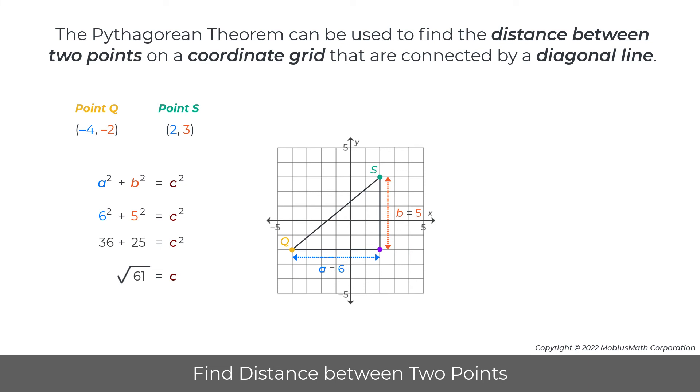For these two points, the diagonal distance is the square root of 61, which is almost 8 units long.